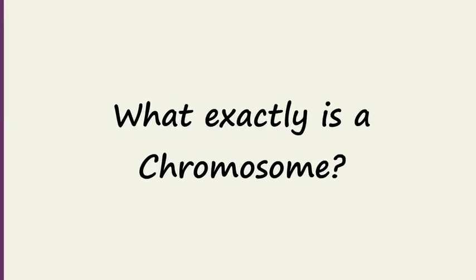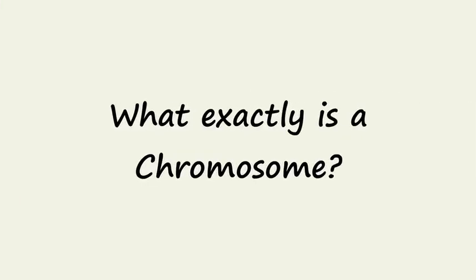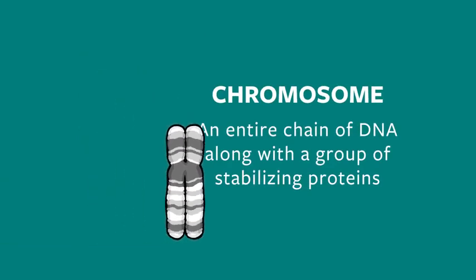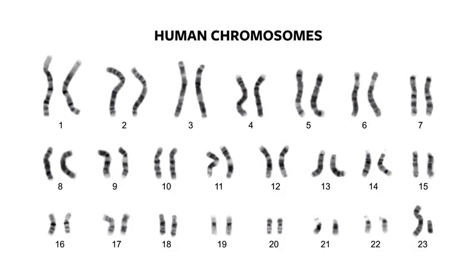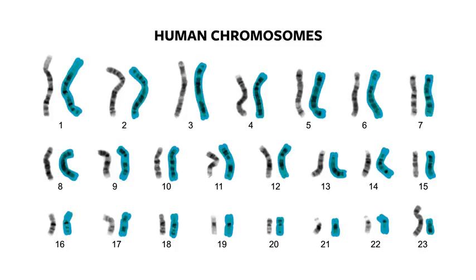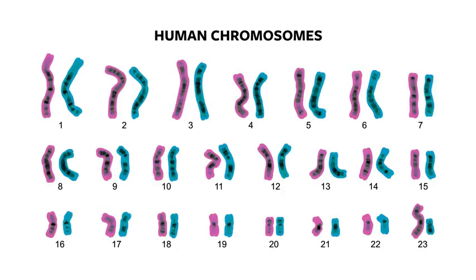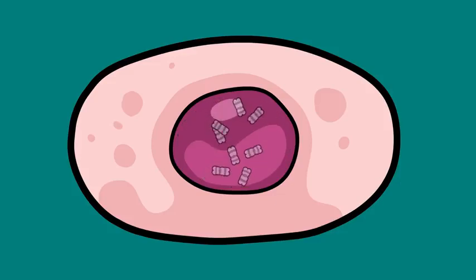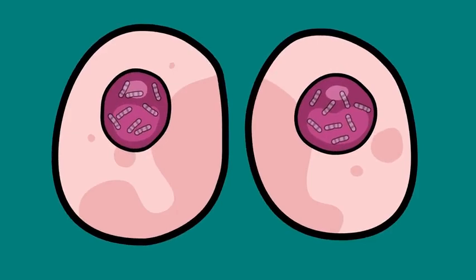So, to sum things up — what exactly is a chromosome? A chromosome is an entire chain of DNA, along with a group of stabilizing proteins. Humans typically have 23 pairs of chromosomes in each of their cells — that's 46 altogether. In your body, one member of each pair came from your father, the other from your mother. For most of a cell's life, chromosomes exist in a loose, noodle-like structure. Chromosomes are copied and then condensed like spools of yarn for durability when a cell prepares to reproduce by splitting in two.